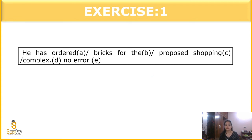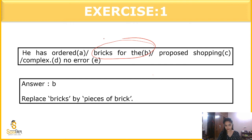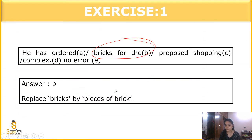The next question: 'He has ordered bricks for the purposed shopping complex.' The error is here — some words are always plural, some always singular. The correct form is 'pieces of brick for the proposed shopping complex.'